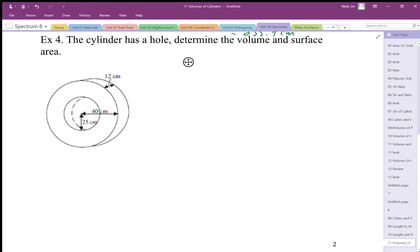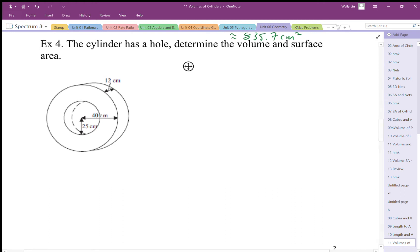Okay, so this cylinder's got a hole in it. We want to determine the volume and surface area here. The volume again is going to be fairly straightforward. We're going to take the area of the circle.